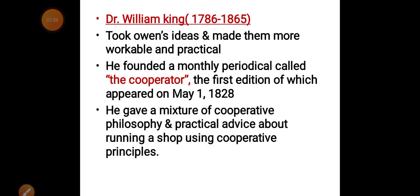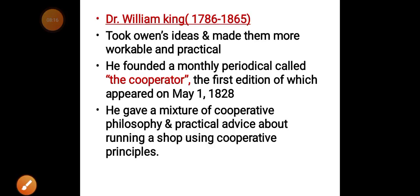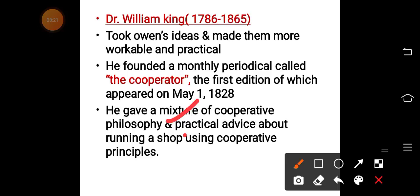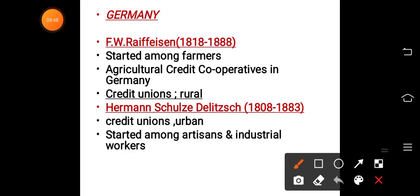Then we come to Dr. William King. He ran a paper called 'The Cooperator,' whose first edition was published on May 1st, 1828. Dr. William King was very much influenced by the ideas and thoughts of Robert Owen. He gave a mixture of cooperative philosophy and practical advice, explaining practically how to run a cooperative shop on the lines of cooperative principles.